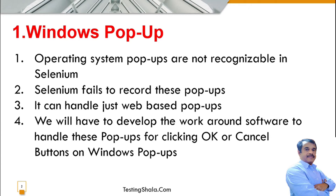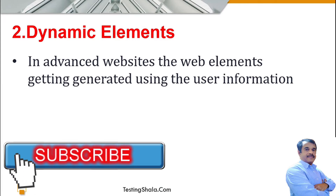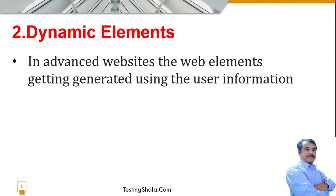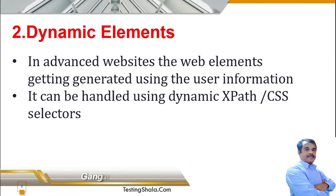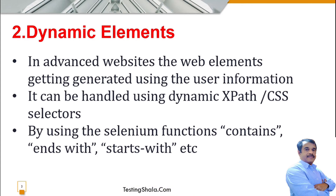The second challenge is dynamic elements. With the latest technology, websites populate everything based on user information. Every user gets different screens, different functionalities, and different roles and responsibilities, so you would be seeing different things altogether. At that time it is very difficult to recognize any object coming from a totally dynamic perspective. We should use dynamic XPath or CSS selectors for identifying dynamic elements, and sometimes use contains, ends-with, or starts-with Selenium functions.